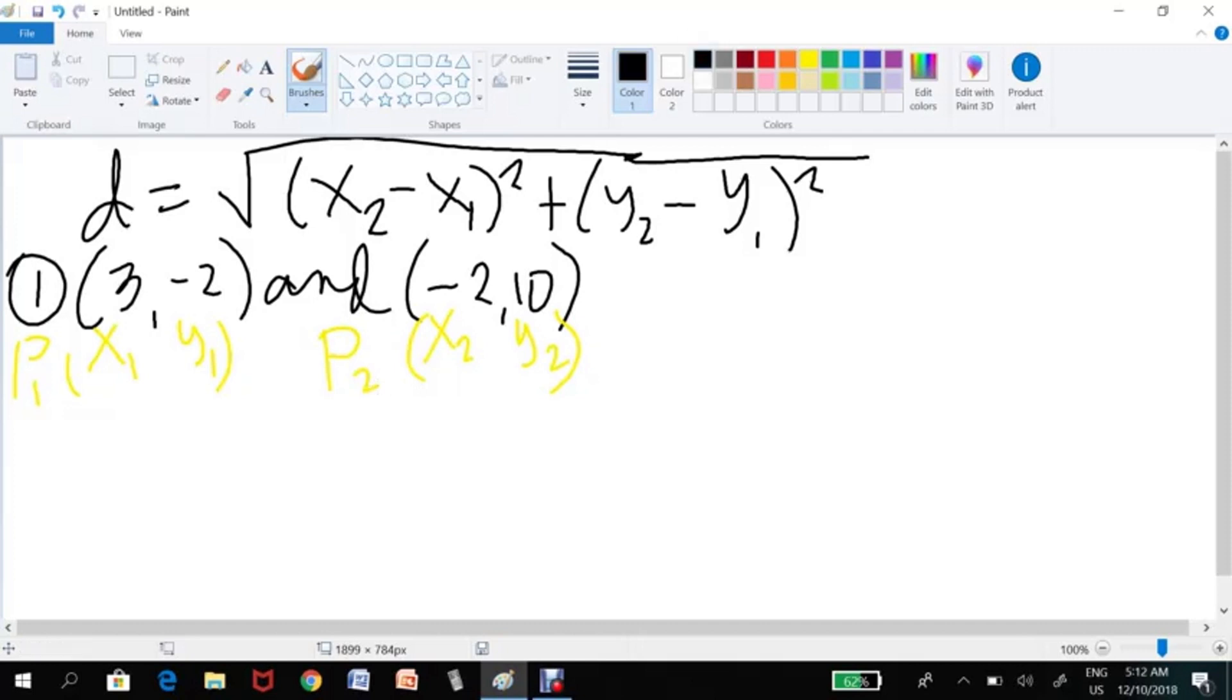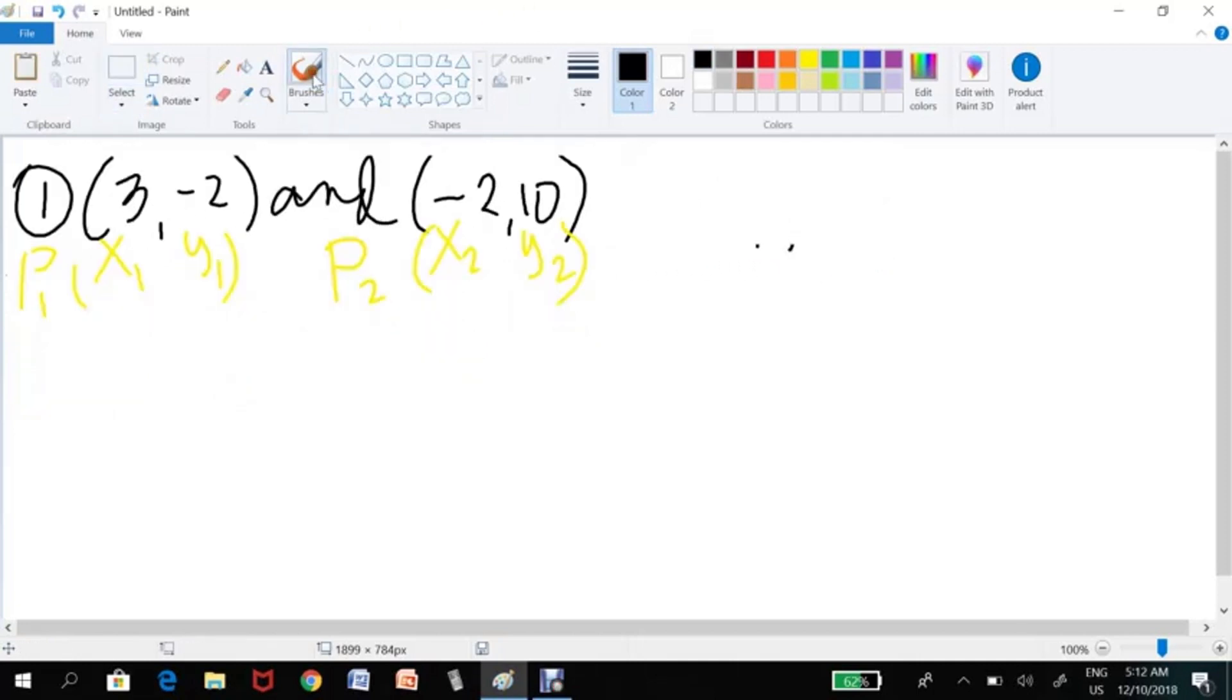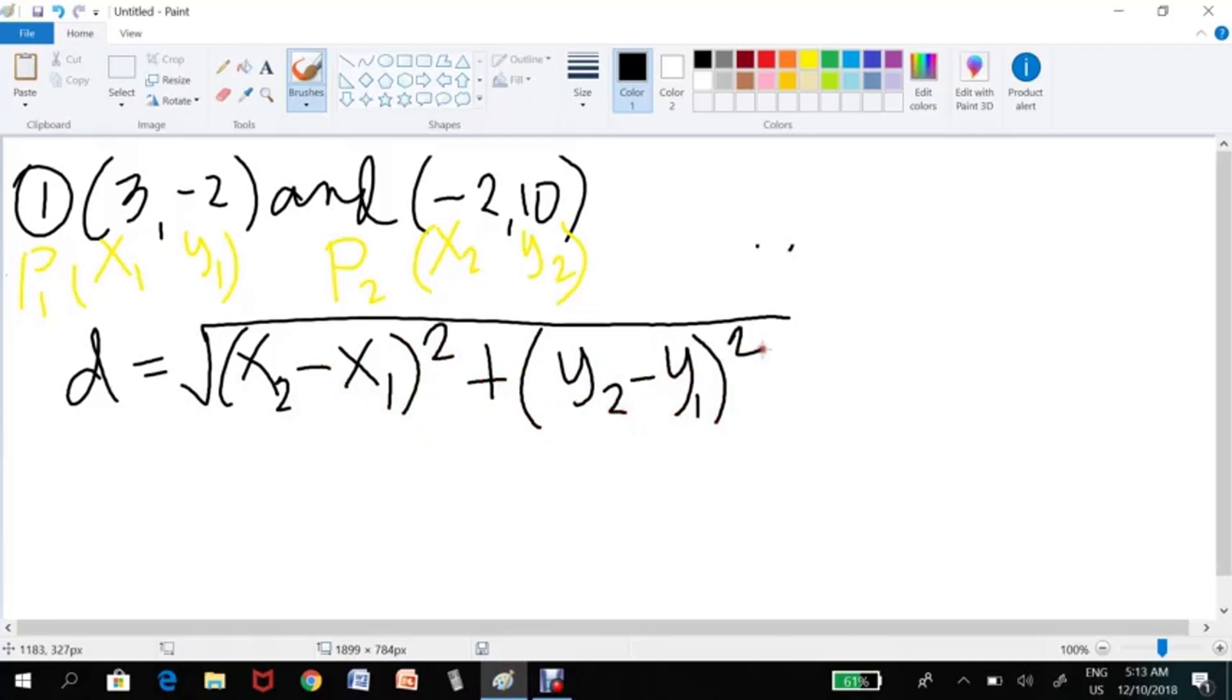So, we have this distance formula. Let's write the distance formula. You have to memorize it. The distance formula is d equals the square root of—always start with x₂. So, x₂ minus x₁, and then square it. Then it's always plus. Then y₂ minus y₁, and then you square it.